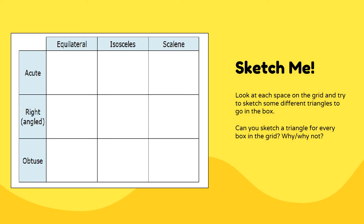Here's a little opportunity to test what you know. Look at each space in this grid. In each space, I want you to sketch a triangle that fits the criteria. For example, in the first space, you should sketch an acute equilateral triangle, if possible — it would look something like this. Can you sketch a triangle for every box in the grid? Pause this video and give it a try.